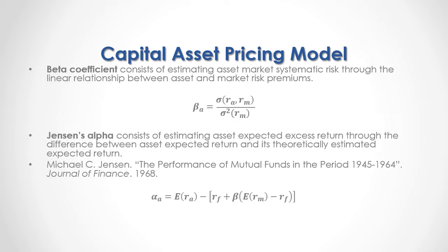As a formula, the asset's alpha is equal to the expected asset return minus the theoretically estimated expected return through the Capital Asset Pricing Model.